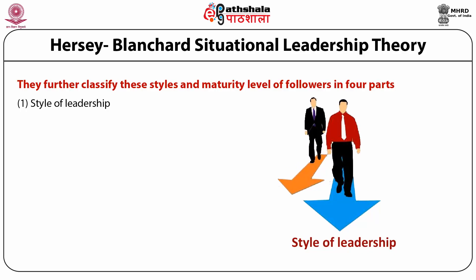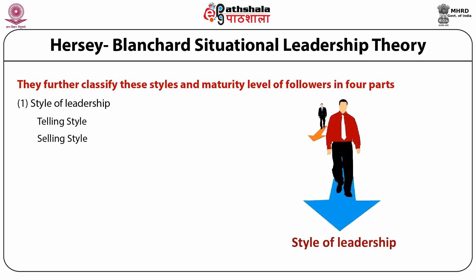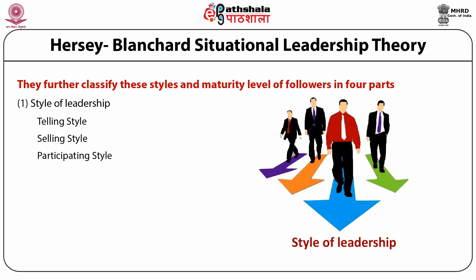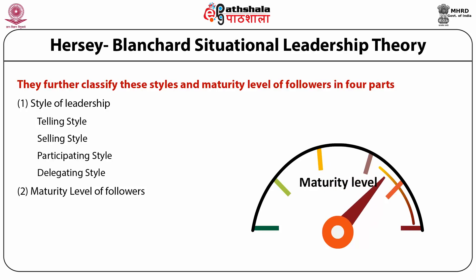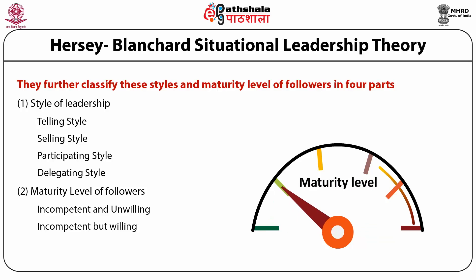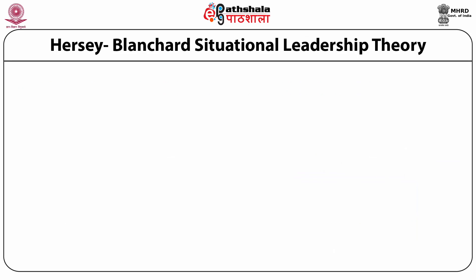They further classify these styles and maturity levels of the followers in four parts. Styles of leadership are: number one, telling style; number two, selling style; number three, participating style; and number four, delegating style. The maturity levels of followers are given in four types: number one, incompetent and unwilling; number two, incompetent but willing; number three, competent but not sure; and number four, competent and willing.